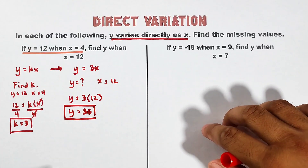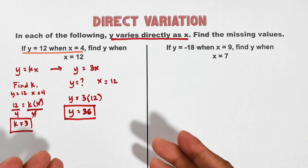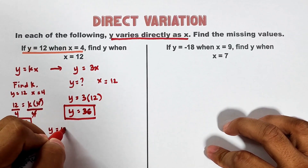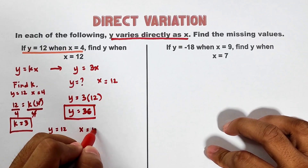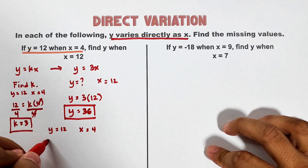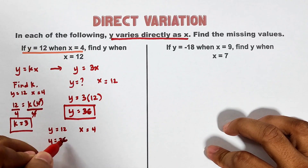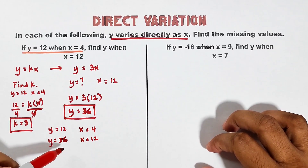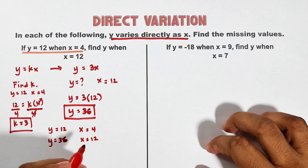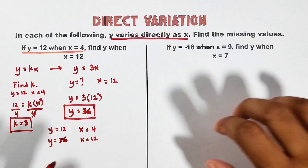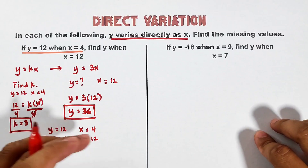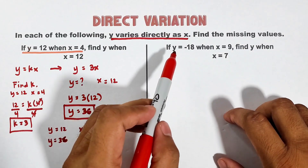Let's verify this is a direct variation. In the first part, y is 12 and x is 4; in the second part, y is 36 and x is 12. From 12, y increased to 36, and x increased from 4 to 12 — both went in the same direction. This confirms it is an example of direct variation.